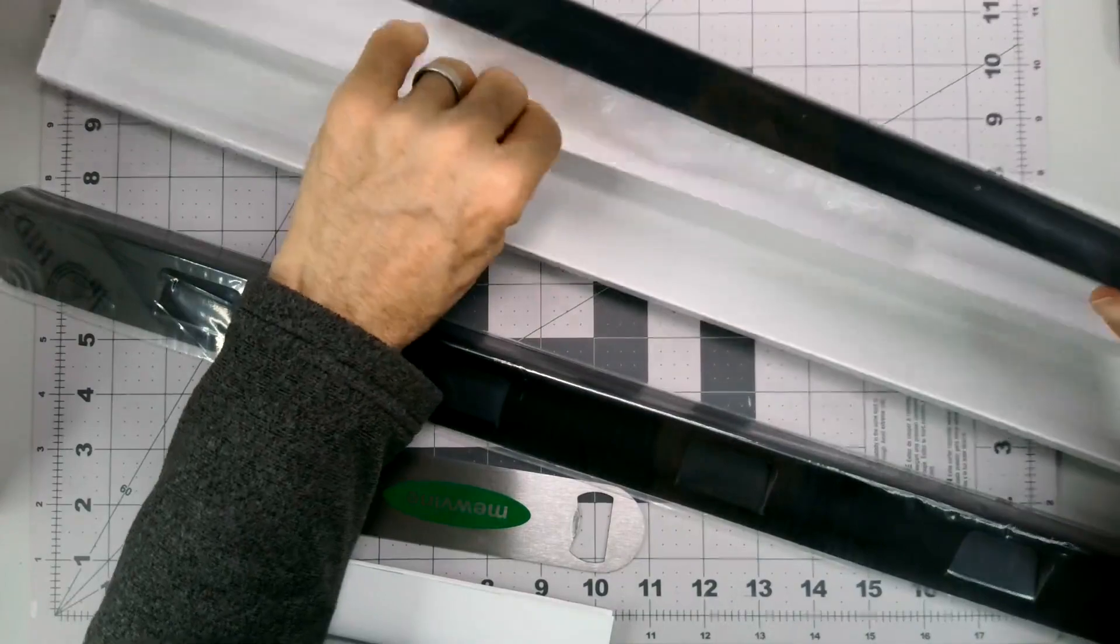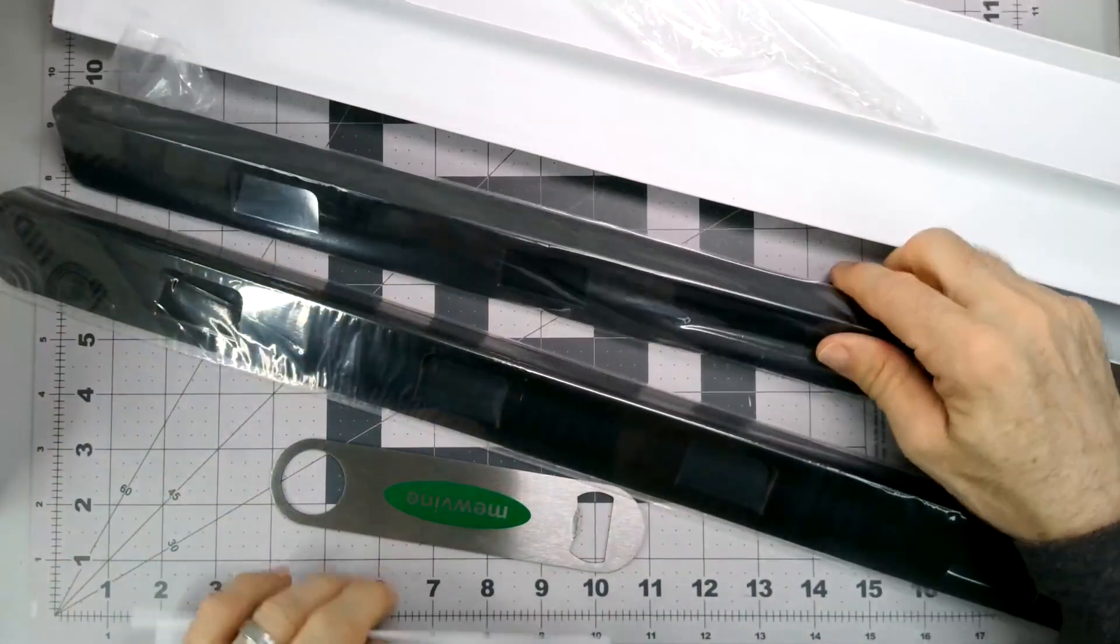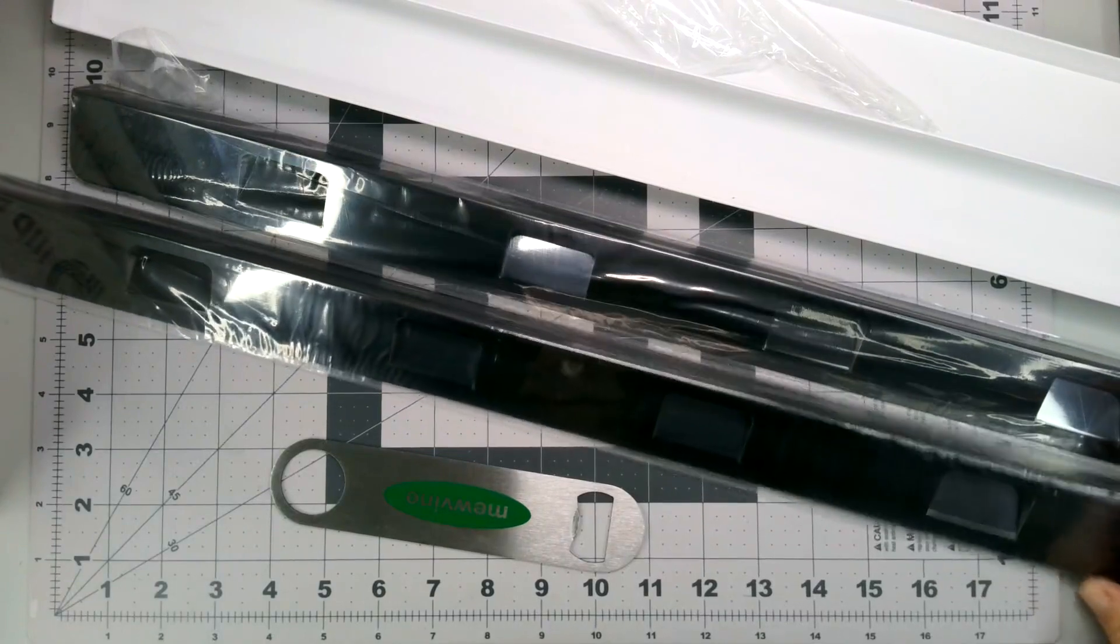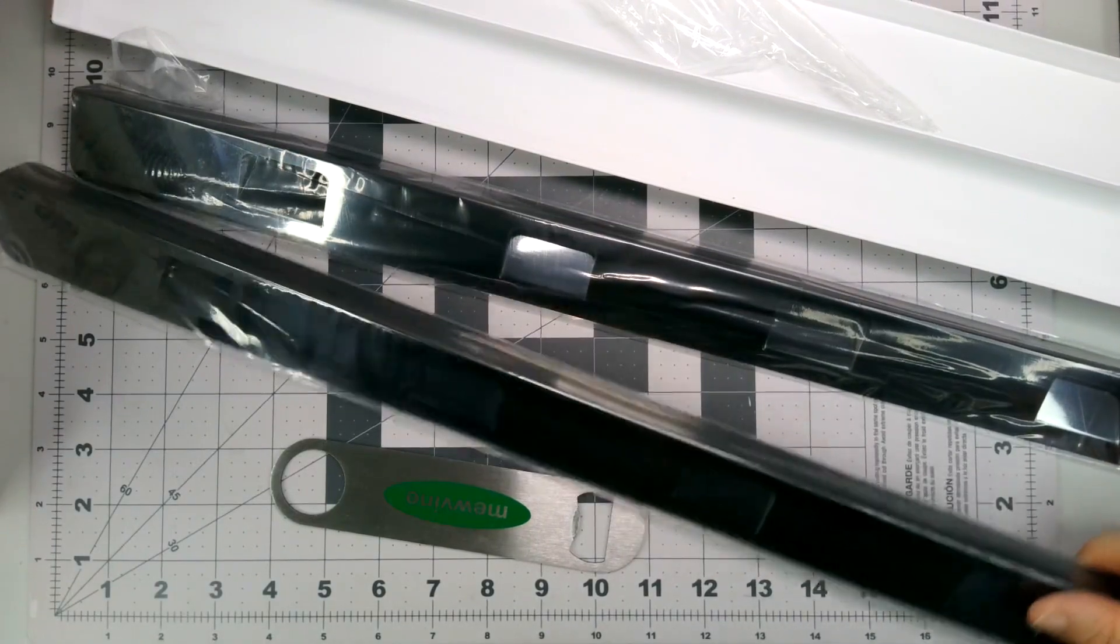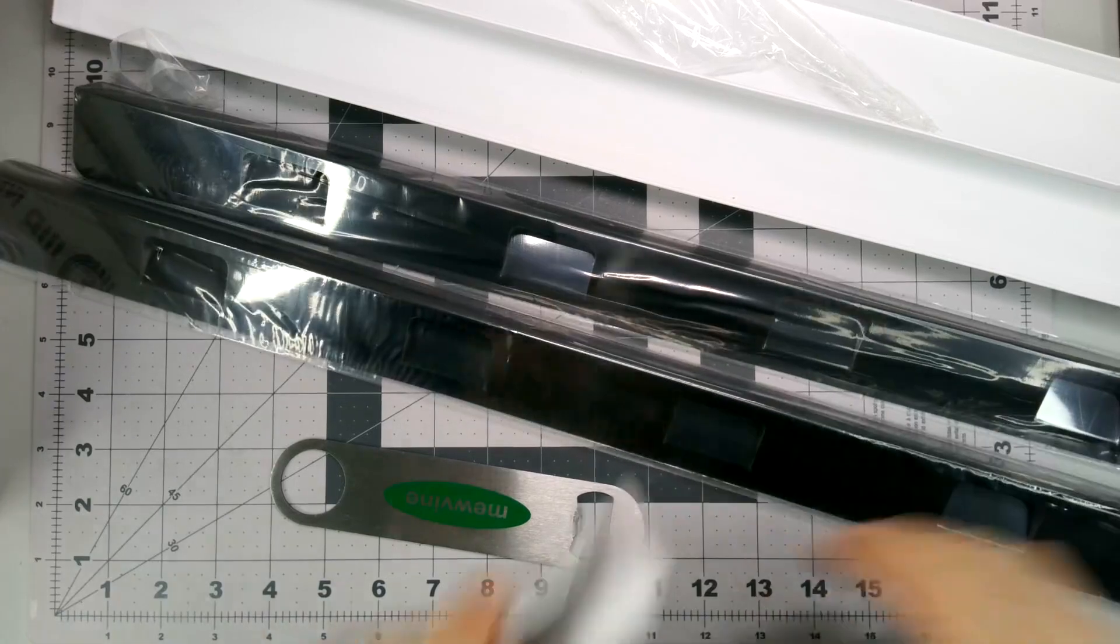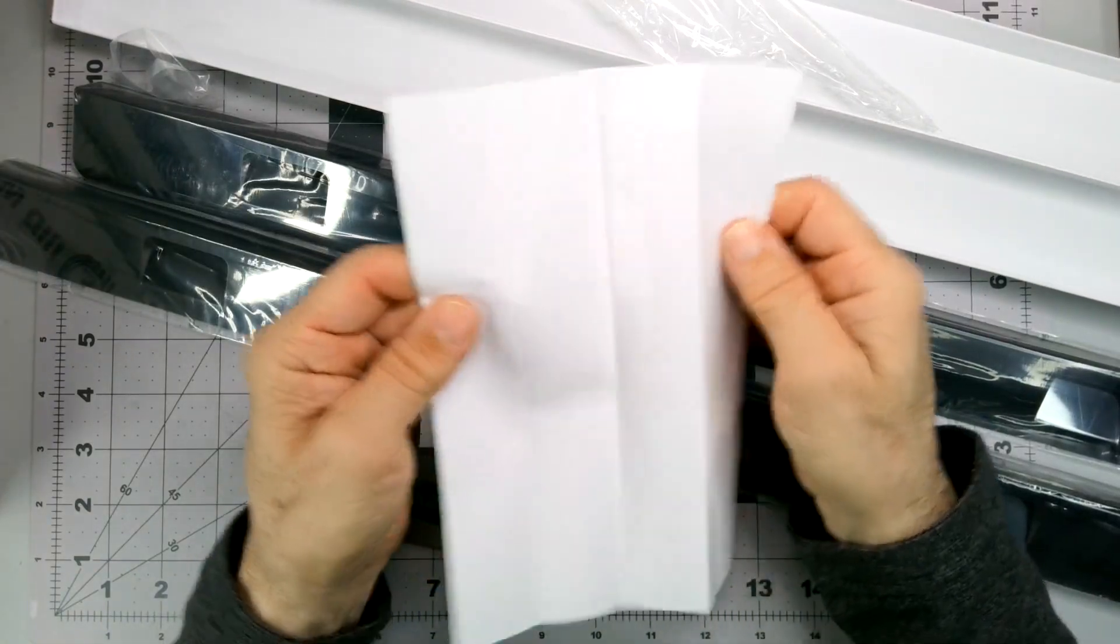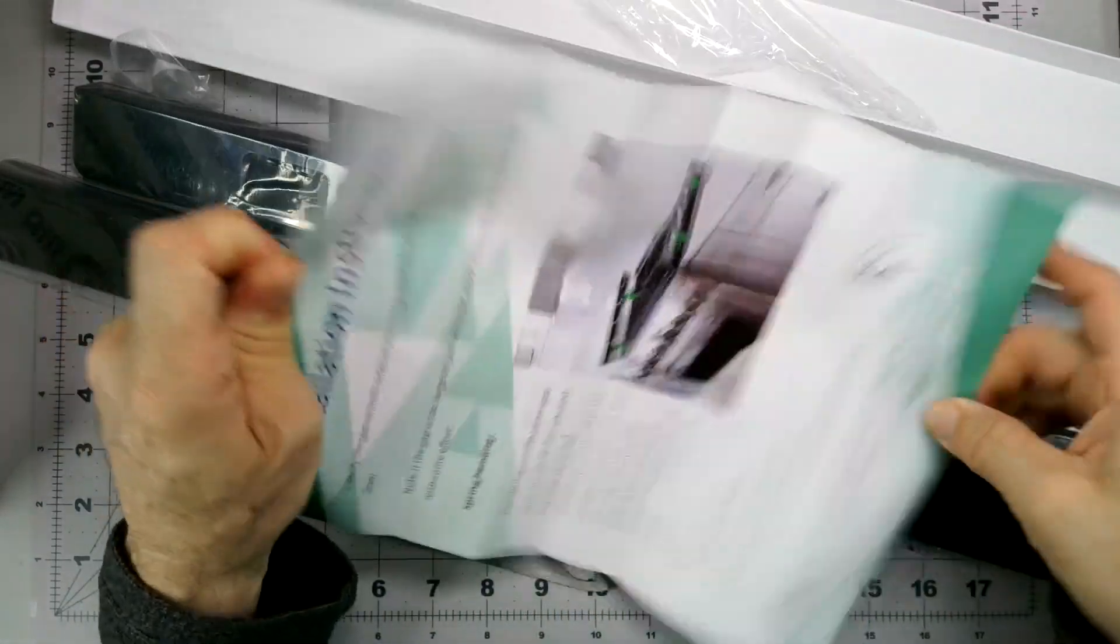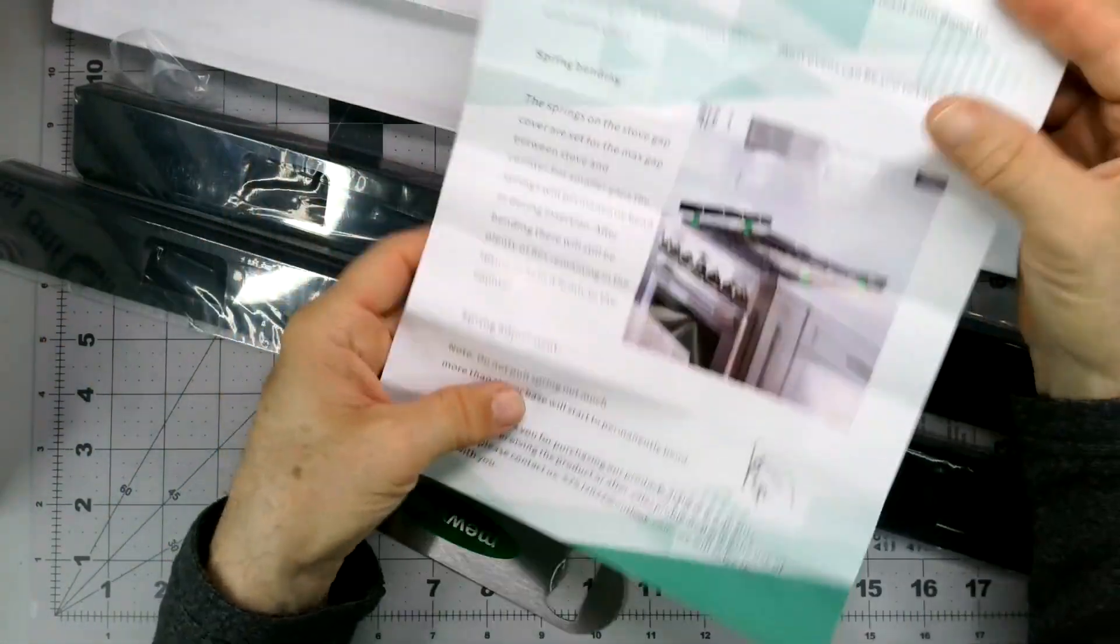So these are supposed to be black metallic and fairly long, I forget, 32 inches something like that. I would assume these are some instructions of how to do this.